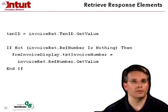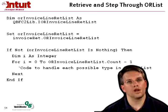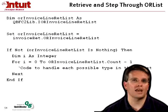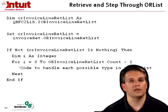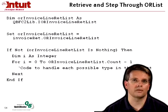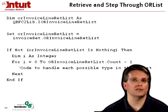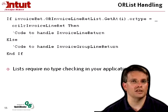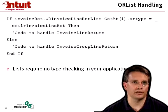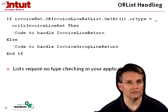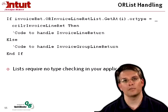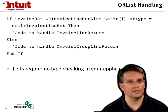To walk through an Or list is a little bit more interesting. First, I make sure that the Or list isn't nothing. Then I walk through that list. For each item in the list, I need to check its type and handle that type for my application. Here I check whether the type is an invoice line ret. And if it is, then I know I've got an invoice line and I need to handle it. Otherwise, it's an invoice group line, and I need to handle it. If I'm just using a list, not an Or list, I don't need to do this type checking, because I'm guaranteed that every item in that list is of the type for that list. But an Or list can have multiple types within it.